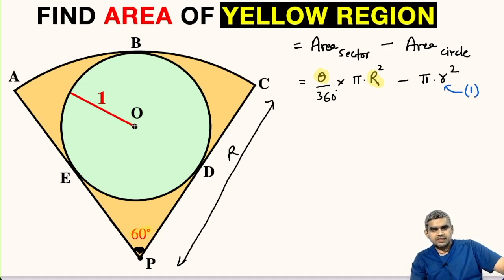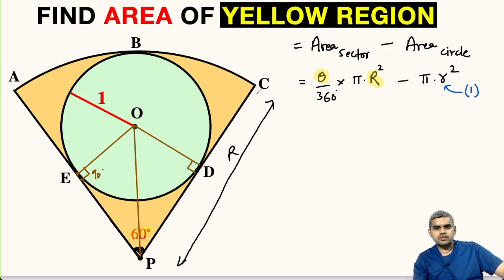Let us do some modifications here. We will join O and D. Similarly, we will join O and E and finally we will join O and P. Since OE is the radius of the circle and AP is tangent to it, if we join these two points, this will be 90 degree. Likewise, OD will be perpendicular to this tangent PC and this is radius. This will be 1 unit and this will be also 1 unit.